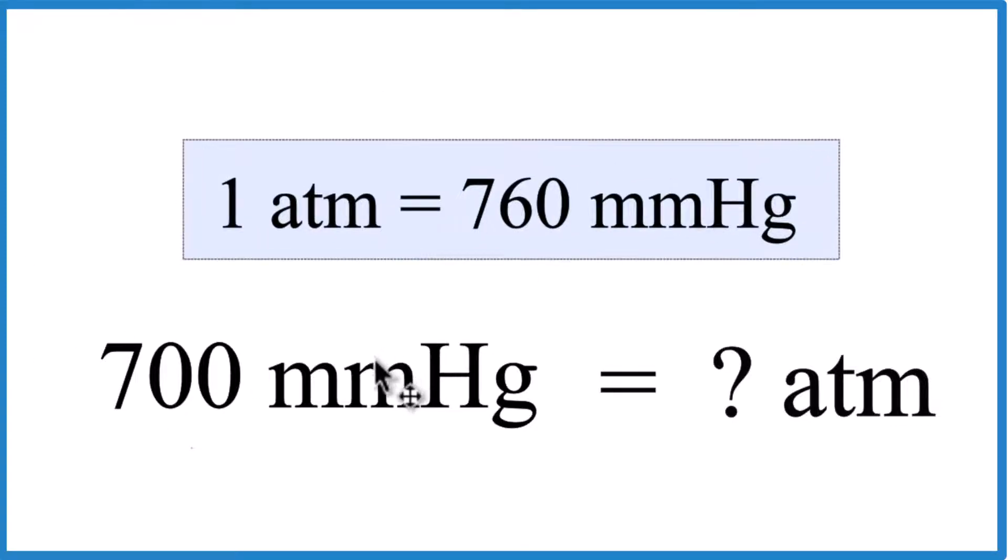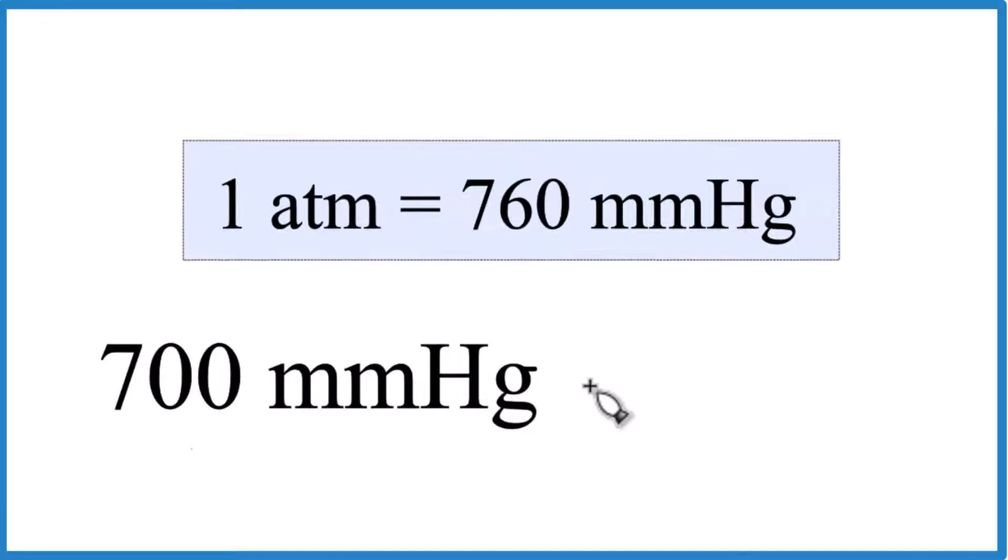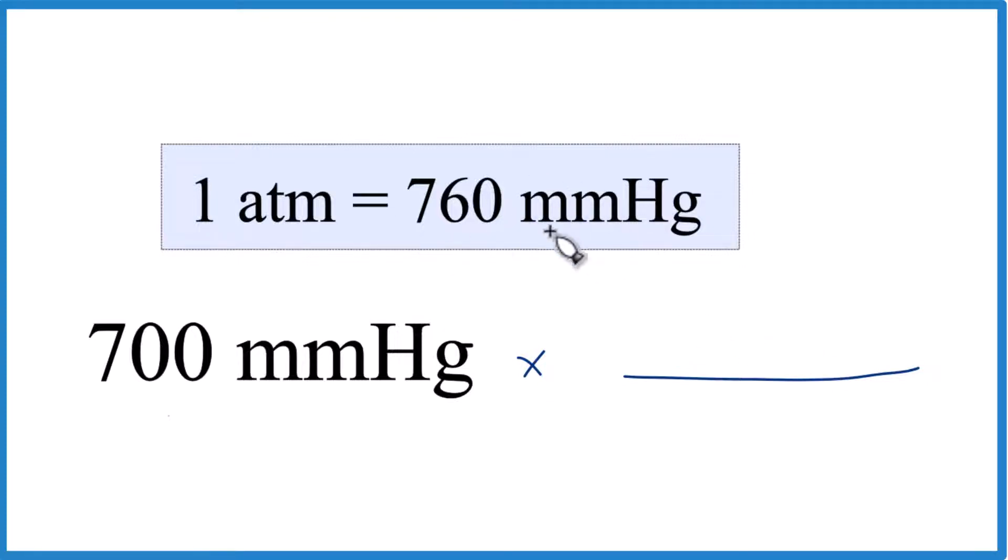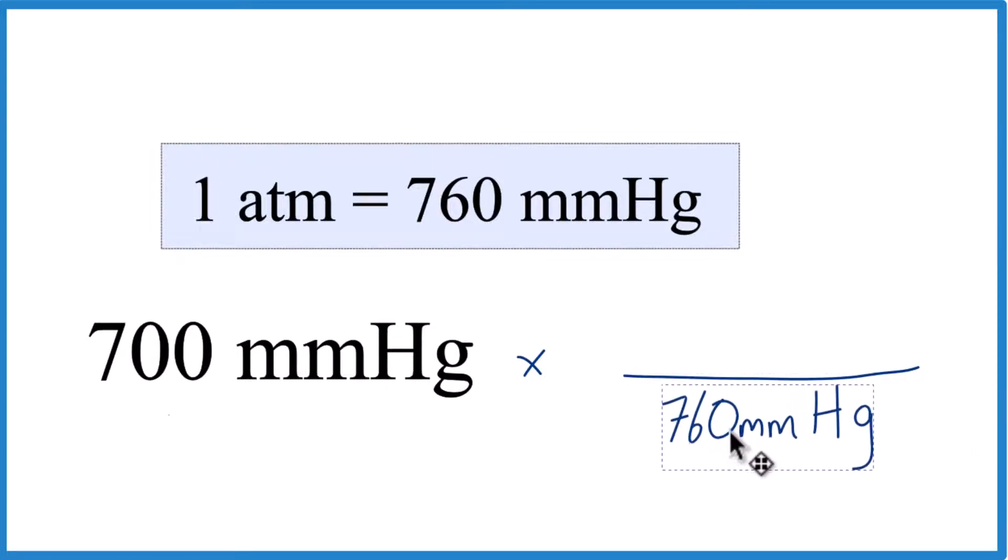And what we're going to do is multiply this 700 millimeters of mercury by that conversion factor. So we have one atmosphere equals 760 millimeters of mercury. We want to cancel out millimeters of mercury so we end up with atmospheres. So we're going to put millimeters of mercury on the bottom and then we'll put one atmosphere on the top.